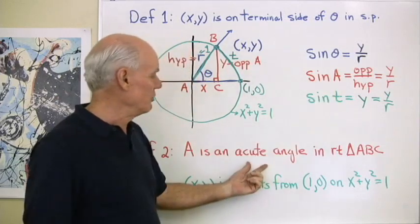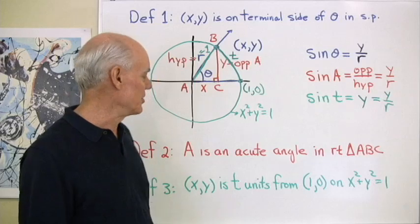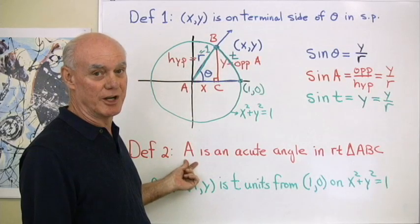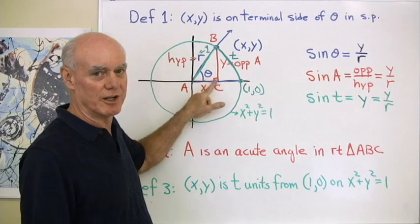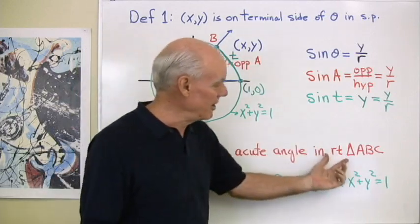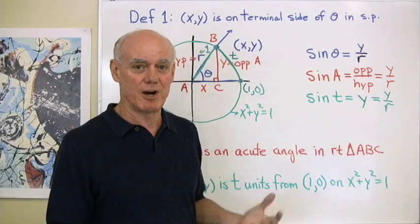This definition, our definition two for right triangle, that's good for working applied problems. It has its limitations though because angle A has to be an angle between 0 and 90 because it's an acute angle in a right triangle. So we're limited with this definition to just right triangles. But on the other hand, there's a lot of application problems that can be solved using right triangles.